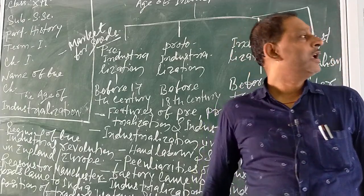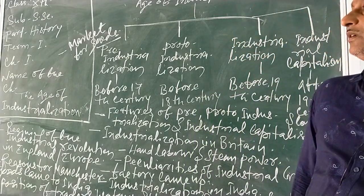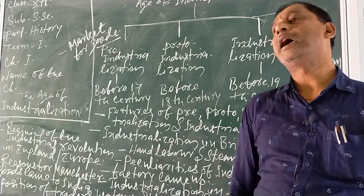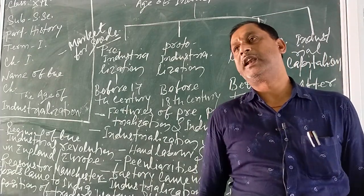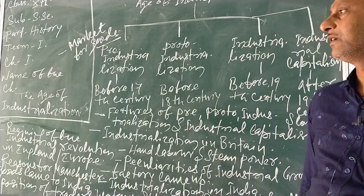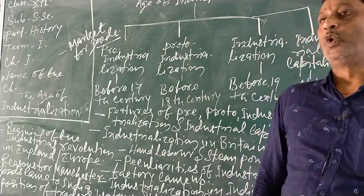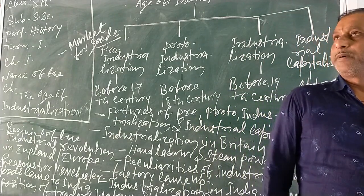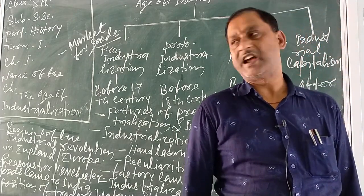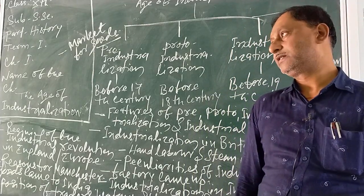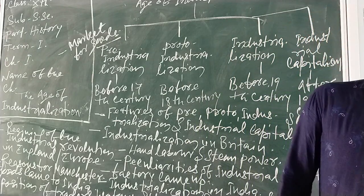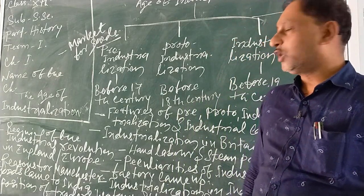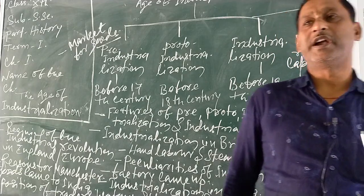Pre-industrialization was the period when people tried to manage production with the help of hand labour. Hand labour in England and Europe was carried out using old methods of production. Some features of pre-industrialization include: first, handmade production; second, production based on human skills; and third, production only for consumption due to low production and low investment.